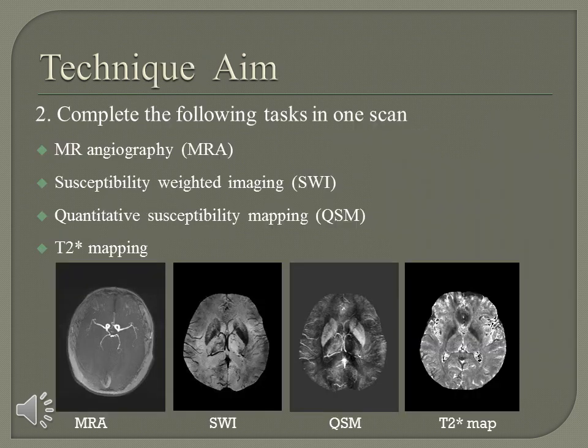In this study, we also want to complete the following tasks simultaneously in one scan: MRA, SWI, QSM, and T2* mapping. The images shown on the slide were scanned using our fully flow compensated multi-echo sequence in a single scan.